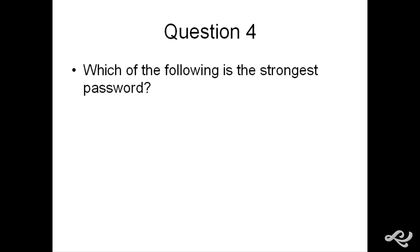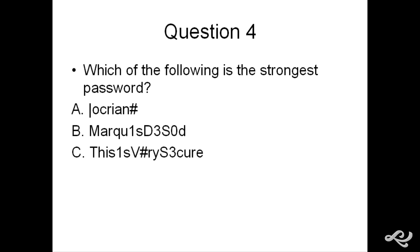Question 4. Which of the following is the strongest password? A says Locrian with a pipe sign instead of the L and a pound sign on the end. B says Marquee Decide with a 1 in the place of the I, a capital D, capital M in the beginning, a 3 instead of an E, a capital S, a 0 instead of an O. Then there's C. This is very secure. Capital T, there's a numeric 1, we see a capital V, pound sign, a capital S, number 3, and a lot of characters. And D. This is very secure with just one capital letter.